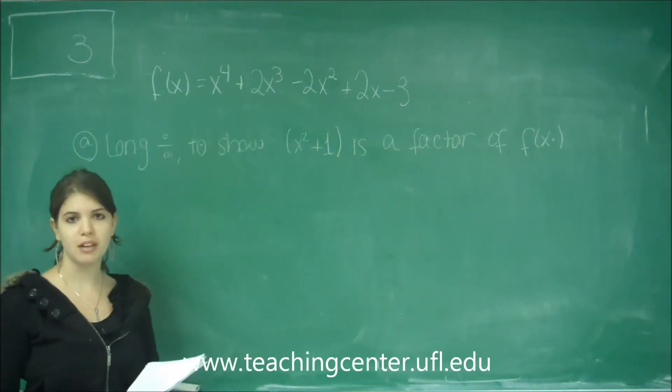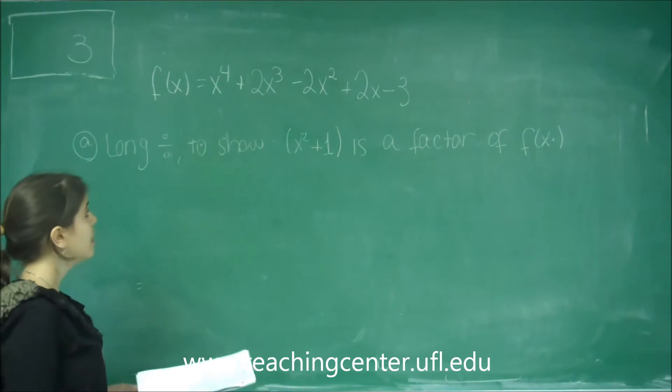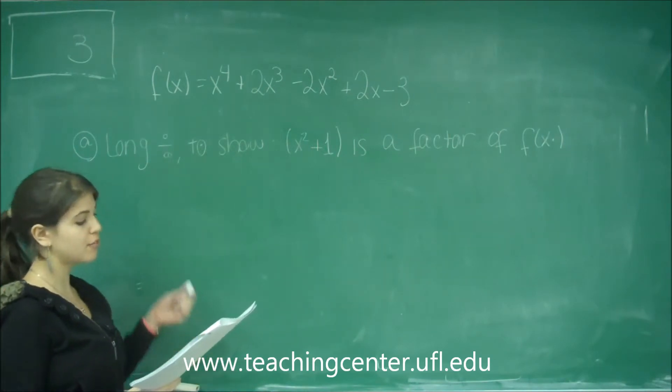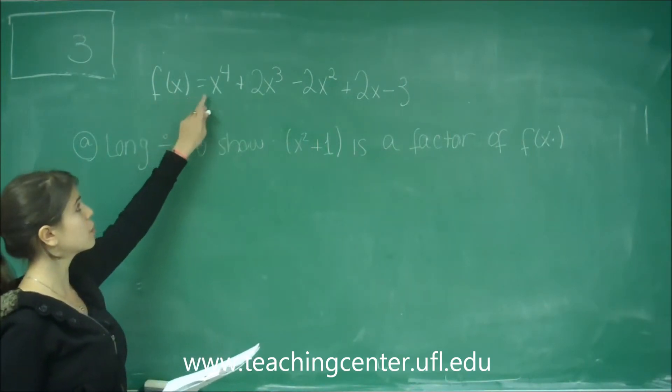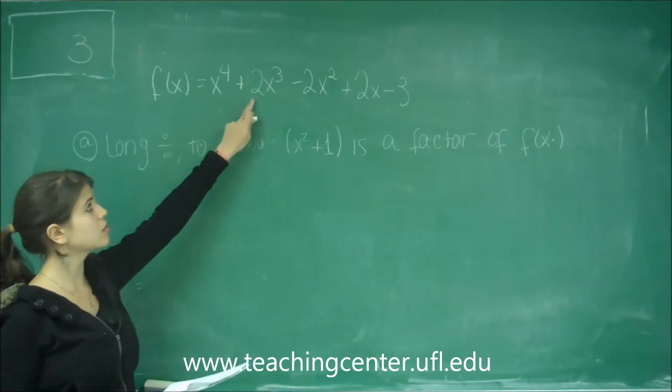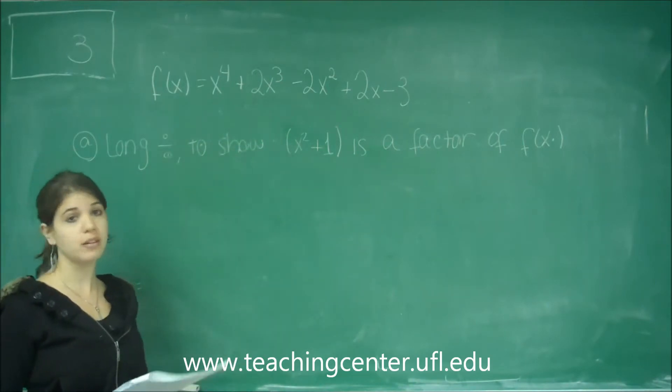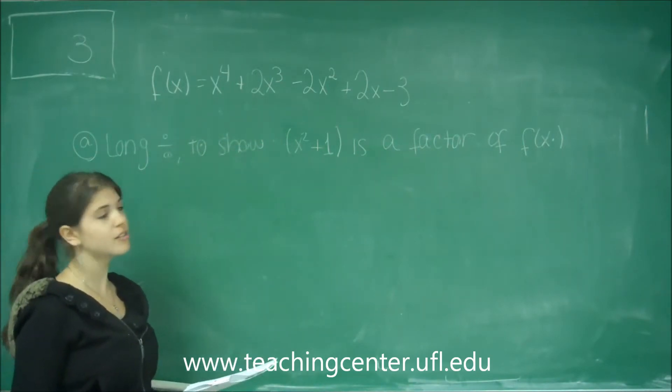This is problem number 3 of the free response. Given the function f of x equals x to the 4th plus 2x cubed minus 2x squared plus 2x minus 3.